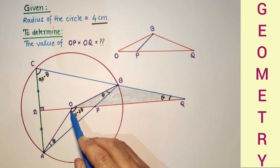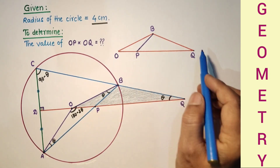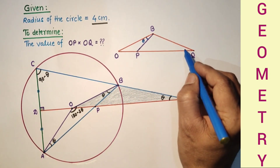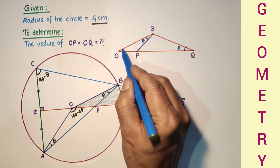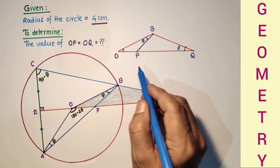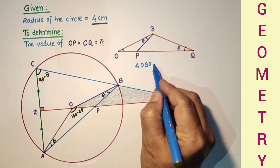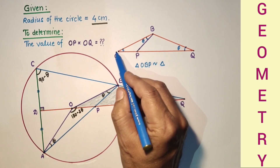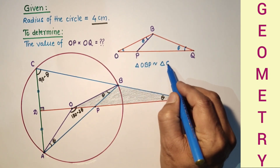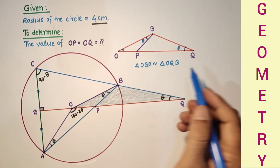Now consider triangles OPB and OBQ. In triangle OPB, this angle is theta, and in triangle OBQ, this angle is also theta. This angle is common in both triangles. So these two triangles are similar by the AA test of similarity — triangle OBP is similar to triangle OQB.